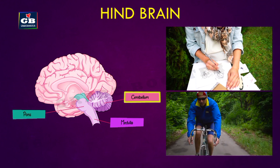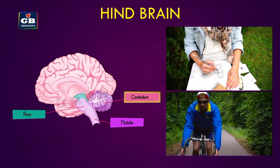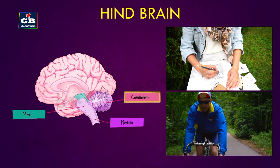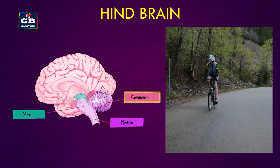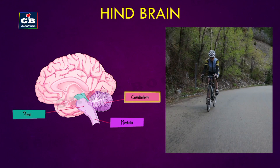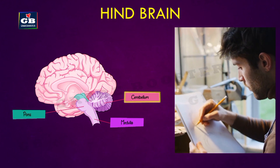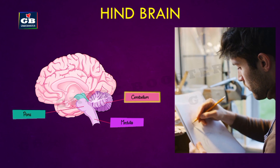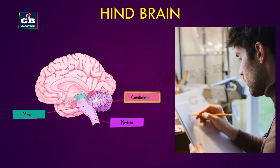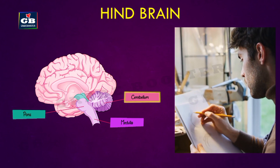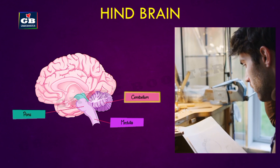The cerebellum is responsible for the precision of voluntary actions and for maintaining posture and balance of the body. Walking in a straight line, riding a bicycle, and drawing — all these are possible because of the cerebellum.